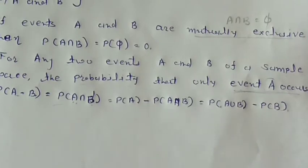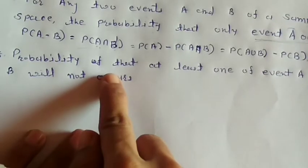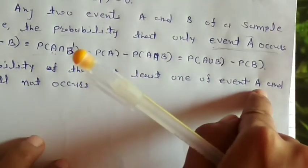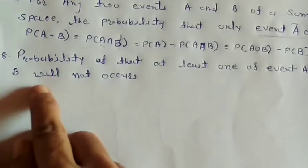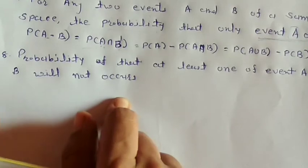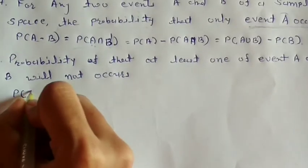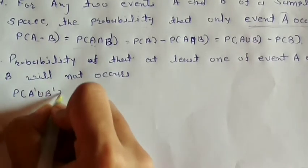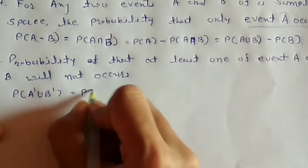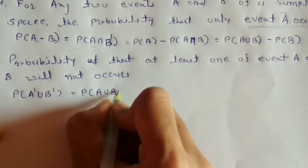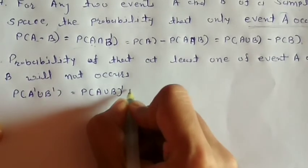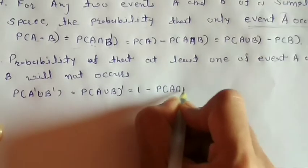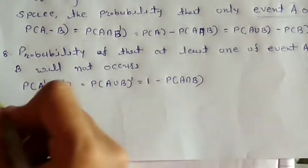Number 8: Probability that at least one of events A and B will not occur: P(A'∪B') = [P(A∪B)]' = 1 − P(A∩B).